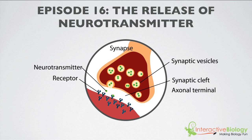Another term that you need to know is the synaptic cleft. And the synaptic cleft is basically this space here that's between the neurons. Most neurons don't connect physically. There's a small space between those neurons where they connect, and there are some important things that are happening there, and we're going to look at those things today.